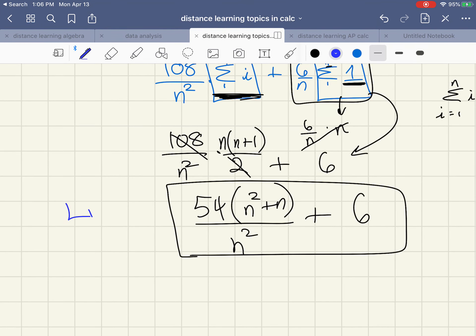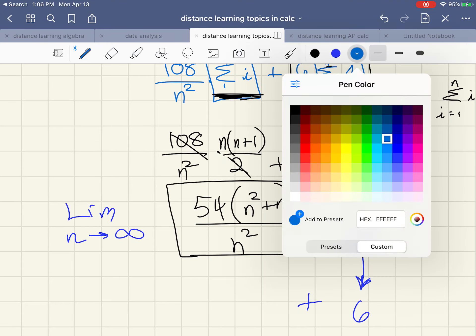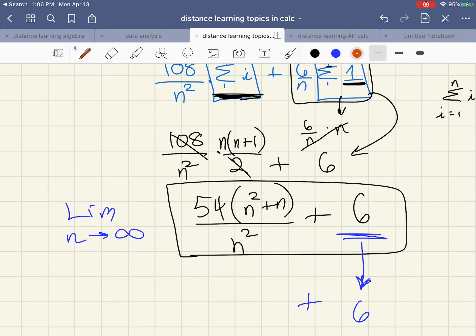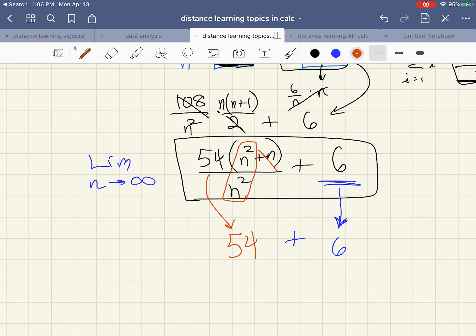Once I have this, this is my formula for the area using n rectangles, but I'm going to do the limit as n approaches infinity. I already know this part is going to be six no matter what n is, and I know that this piece if I think about end behavior, the n doesn't matter, the n squareds will cancel and I'll get 54 here.